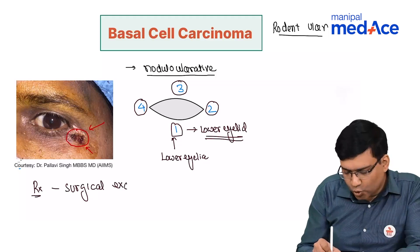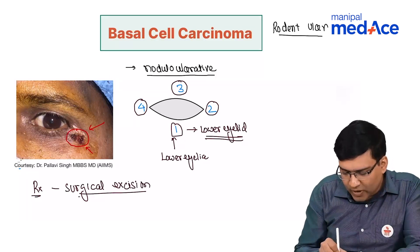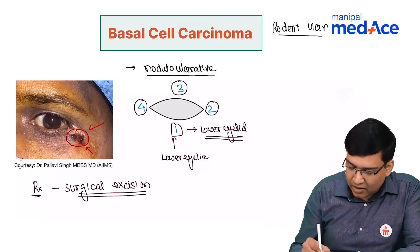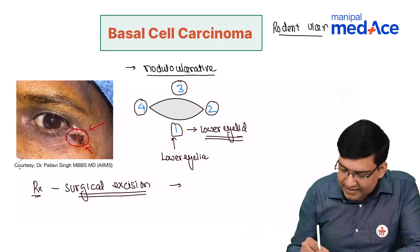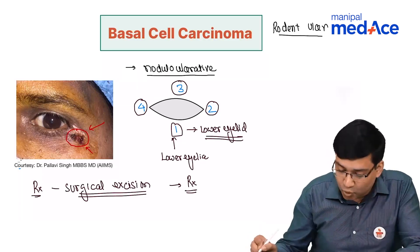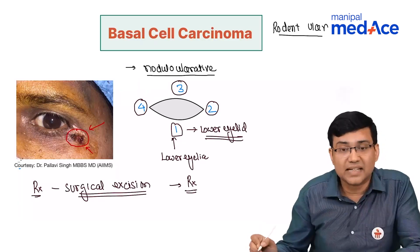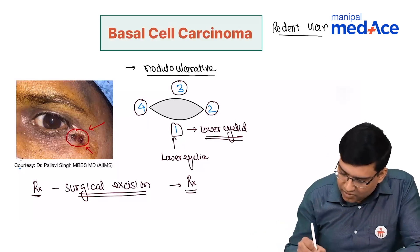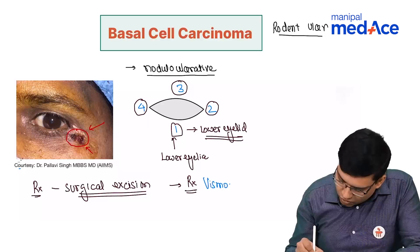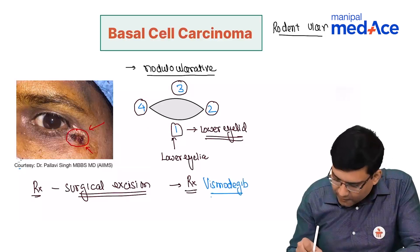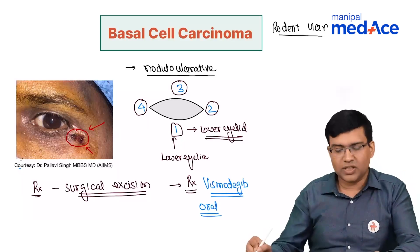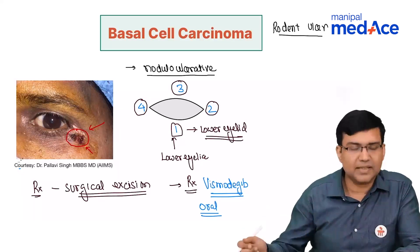The treatment is surgical excision - a wide-based surgical excision. On histopathology you can see a palisading type of appearance. One recent update is that there is an oral drug being used in periocular basal cell carcinoma: the name of the drug is vismodegib.